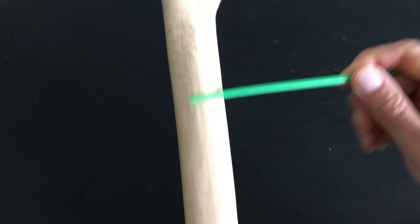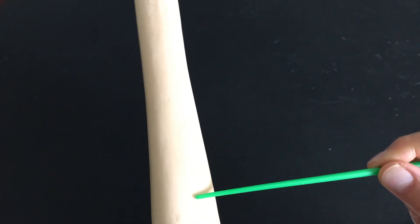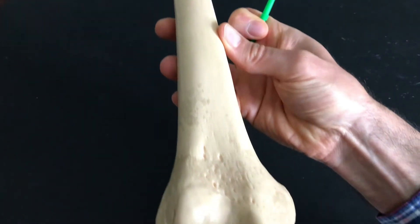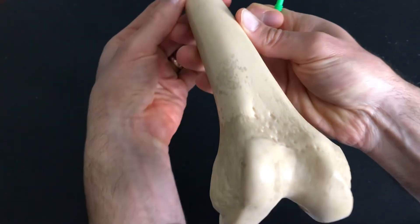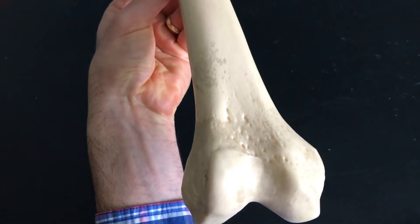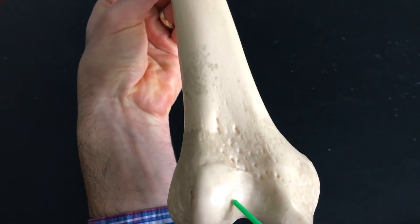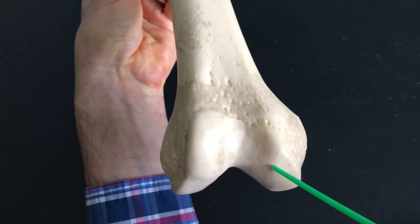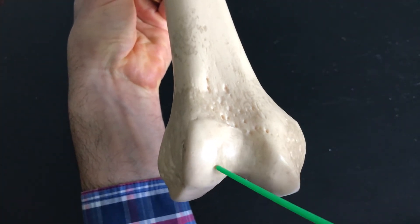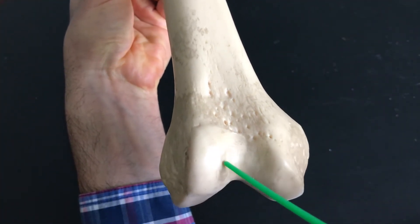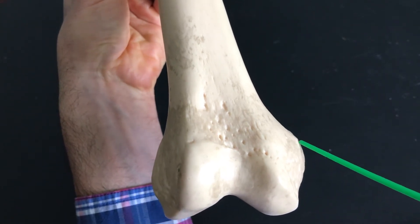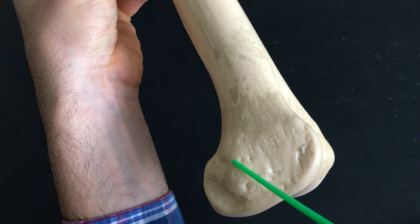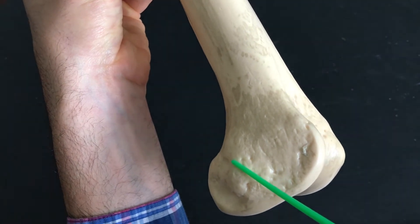Then again, we come down the diaphysis, the shaft of the bone itself, and then as we get towards the distal end here, what we see are these smooth condyles. We have a medial condyle. We have a lateral condyle. And then, of course, we have a medial epicondyle and a lateral epicondyle. Again, epi means upon.